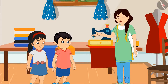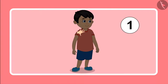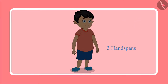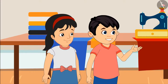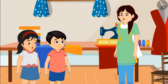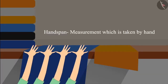Look Chotu, I took the measurement of the length of your shirt with my hand like this — one, two and three. Your shirt is three handspans long. Ok Aunty, this is how things are measured. Aunty, what is a handspan? Pinky, the measurement which is taken by hand is called handspan.